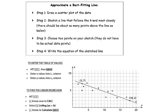Your first step is to draw a scatter plot of the data. You can see that down here we've already got a scatter plot drawn. Step two would be to sketch a line that follows the trend most closely. There should be about as many points above the line as below.